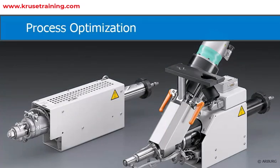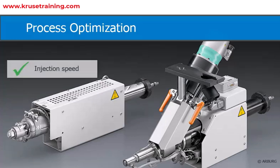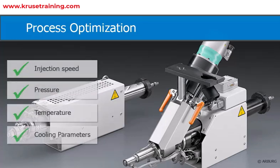Process Optimization: Fine-tune the injection molding process parameters to achieve optimal results. This includes setting appropriate injection speed, pressure, temperature, and cooling parameters to ensure the desired part quality and dimensional accuracy.